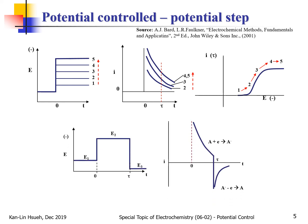Alternatively, if we step the potential from E1 to E2, and then step back to E3, we can see the current as a function of time. From 0 to tau, the current behavior is similar as before. But at E3, for time greater than tau, the current actually reverses — because at E1 we are at equilibrium, and stepping back to E3 reverses the reaction. So the current changes from positive to negative, showing a similar but reversed transient behavior.